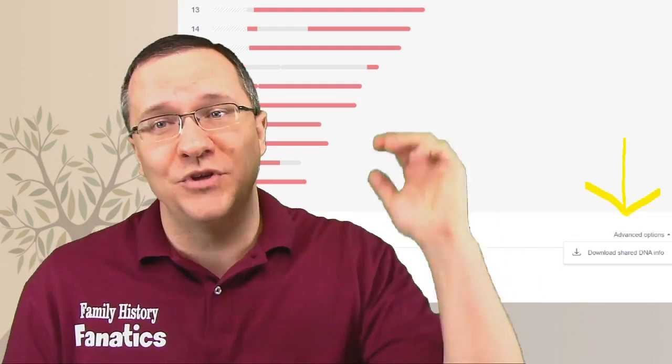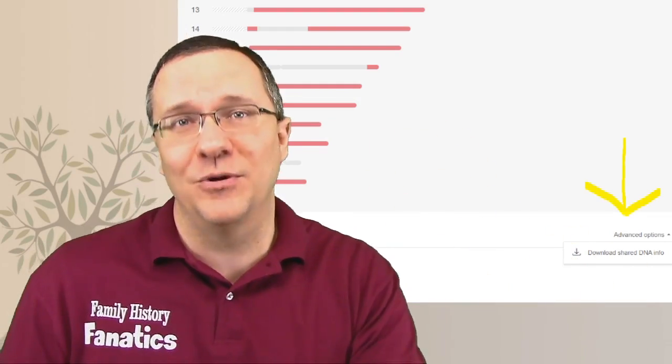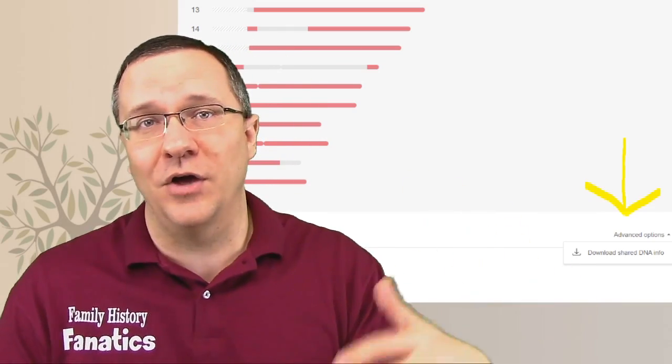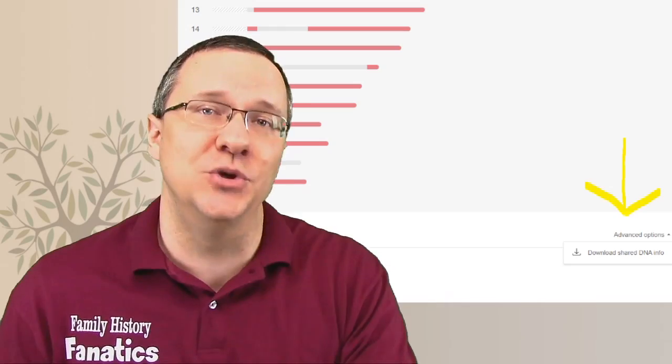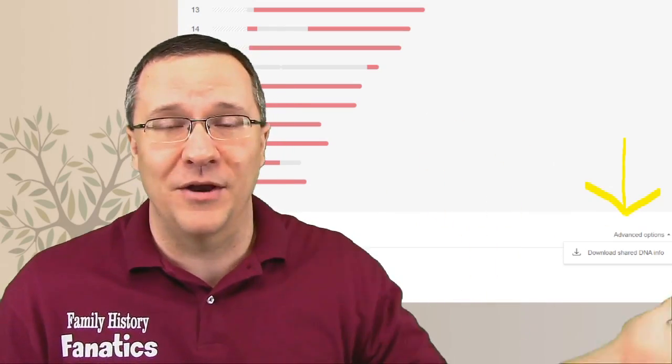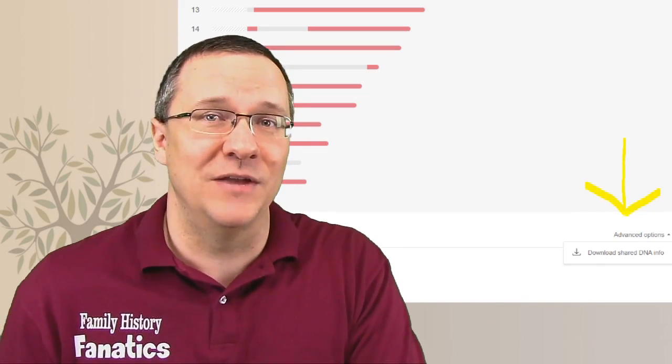If we go over to MyHeritage, when we scroll down to the bottom, we can actually see that, yeah, you can actually download that segment information. Just clicking on that button is going to download all that segment information for whichever matches you have selected. And you can open that up in an Excel file, copy that over into DNA Painter, or any other program that will take this segment information.